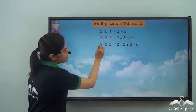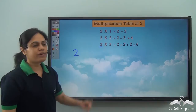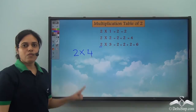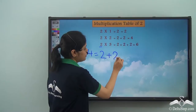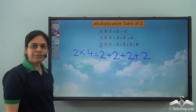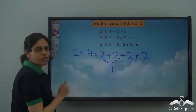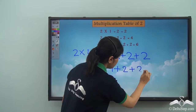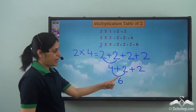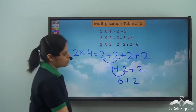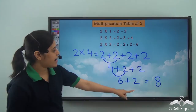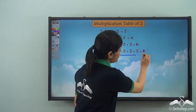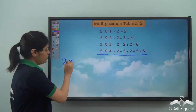What is the next step? Two into four — two added four times. Two plus two is four, four plus two is six, and six plus two is eight. So two into four is eight.